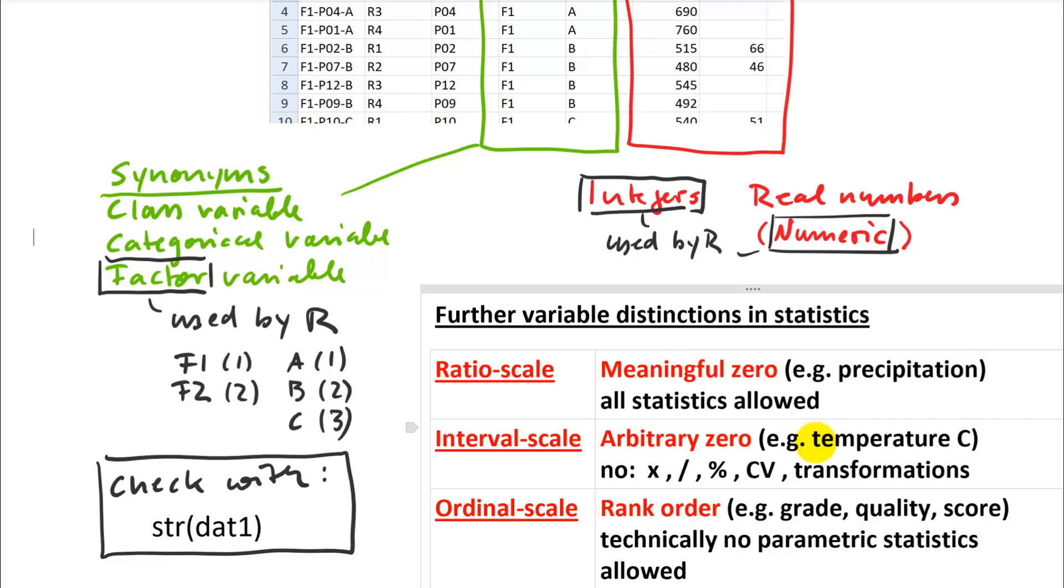And then last but not least, we have ordinal scale variables. So those are rank orders. For example, a grade or a quality or a score. Those are numbers. You can, for example, get a GPA, which is even a real number. But technically, you're not allowed to do any parametric statistics on those types of variables because they do have, in their raw form, they have gaps, and they tend not to be normally distributed.